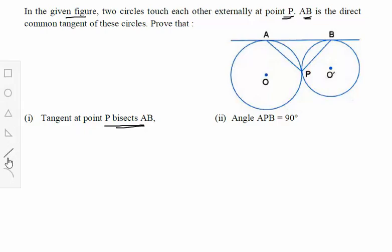Let us first construct that tangent at P. Now we have to prove that this tangent is bisecting AB. Let us take this intersection point as C. So basically we have to prove that AC is equal to BC. This is our target to prove.